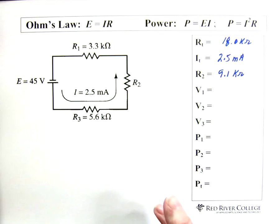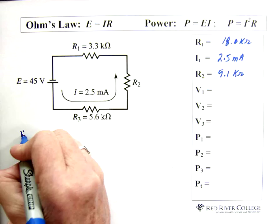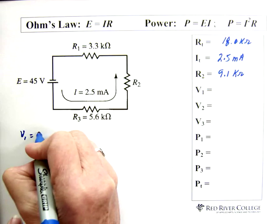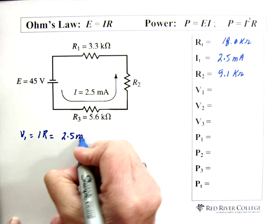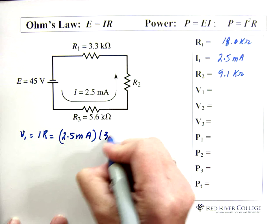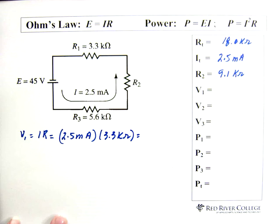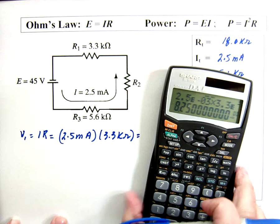Now, just as we did in the other circuits prior, we're going to solve the information. For voltage 1, we can use IR. Our current is 2.5 milliamps. And resistor 1 is 3.3 kilohms. So we have 2.5 exponent negative 3 times 3.3 exponent 3 equals 8.25 volts.